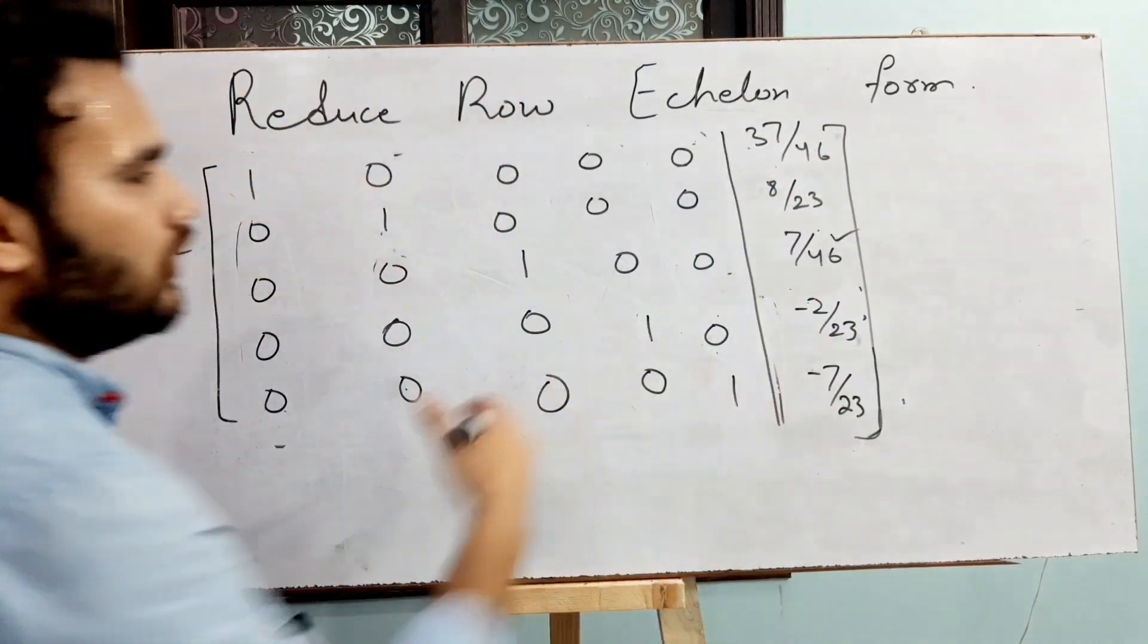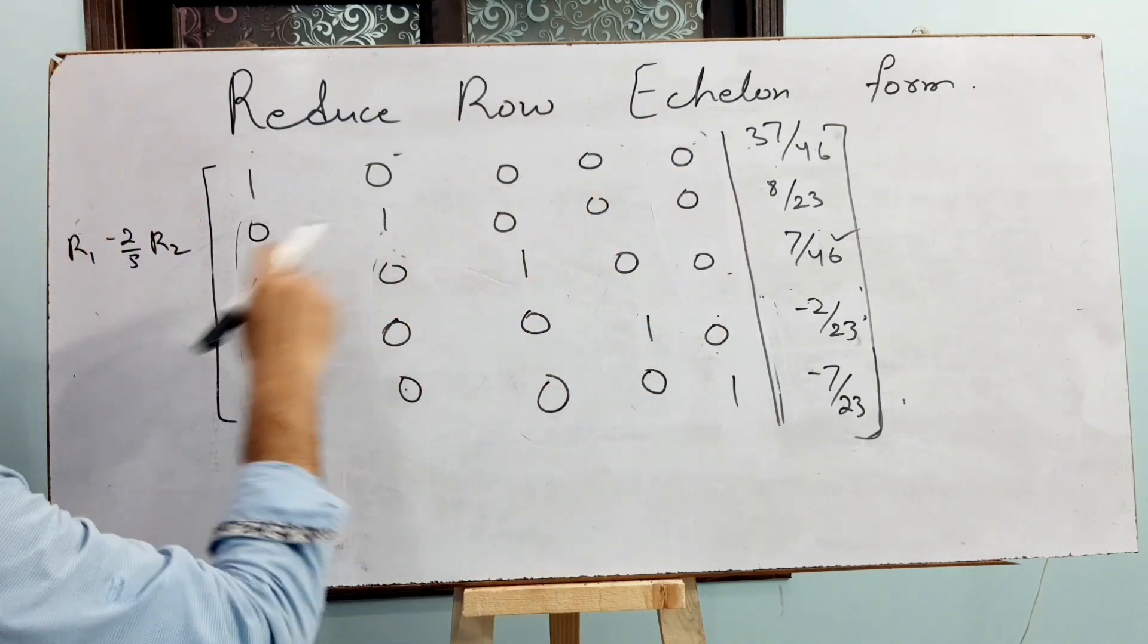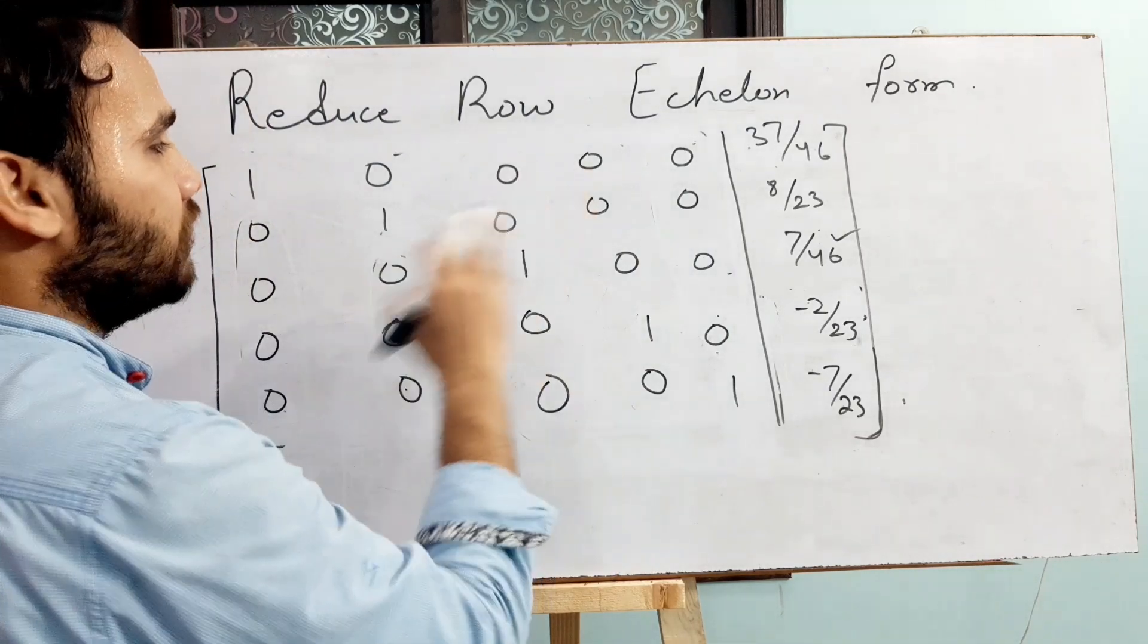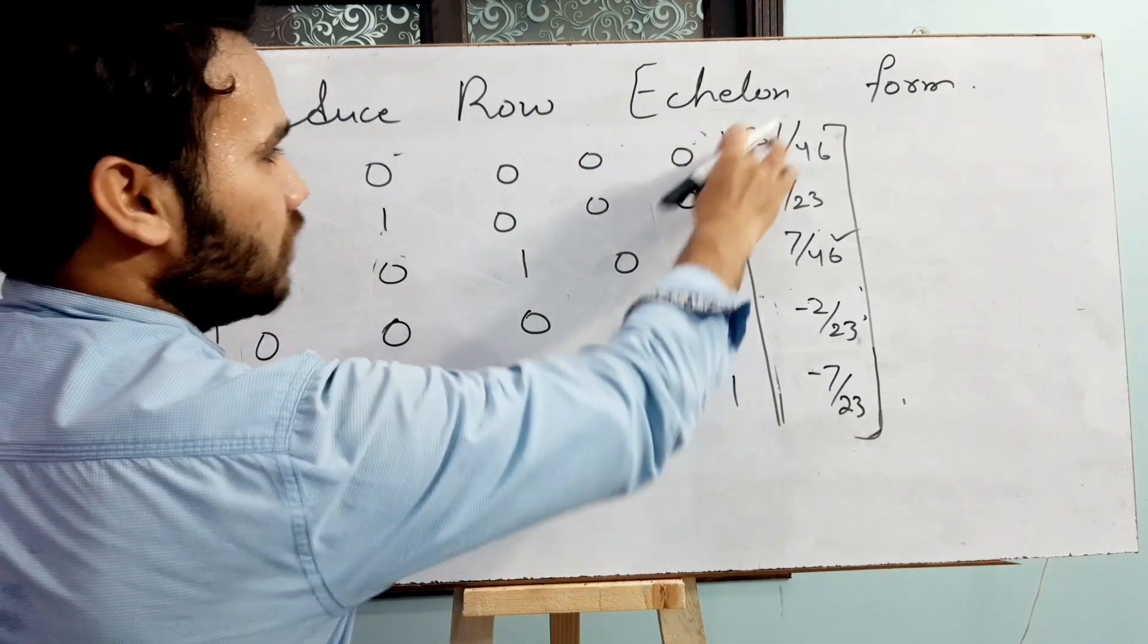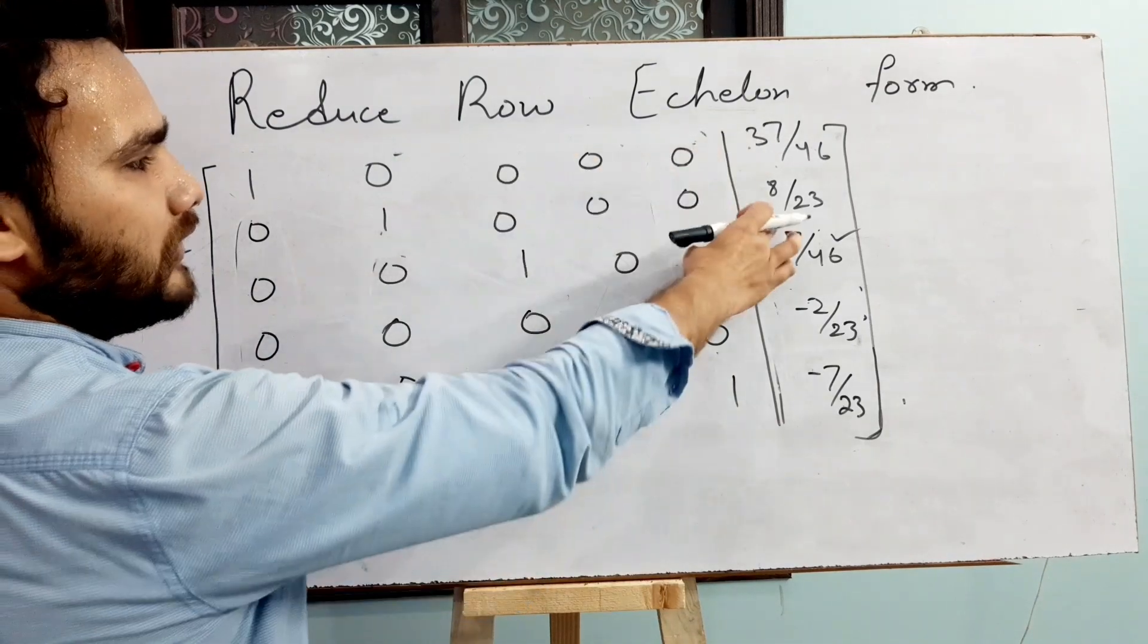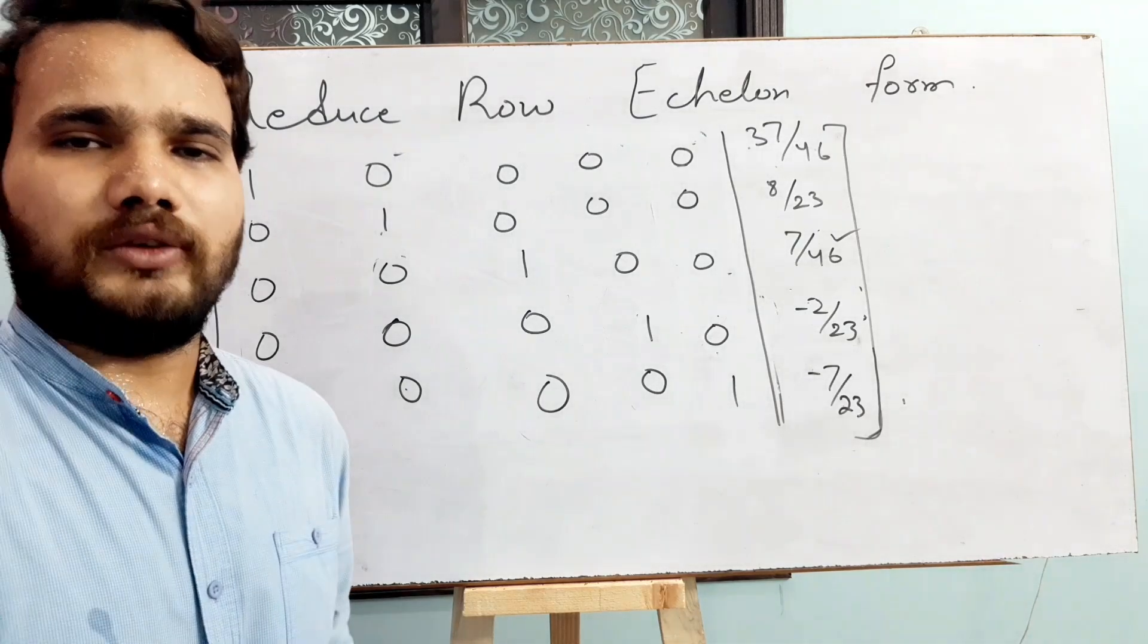So this is what we call reduced row echelon form. This form we just make all diagonal entries should be 1 and rest of them will be 0. The corresponding values are just like this one: this is value of x1, this value of x2, x3, x4, x5 and so on. Thank you so much for watching this video.